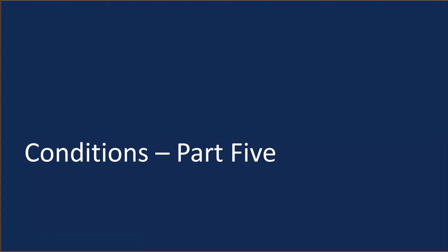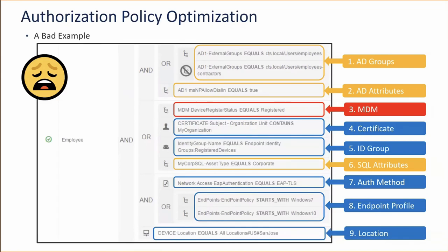For policy optimization, hit counters are a quick win. Every RADIUS policy in ICE has a hit counter — policy set, authentication, and authorization. This is both a troubleshooting tool and a visual aid to confirm policies are working as intended. If a policy has zero hits, check whether it's in the right order or whether you even need it. Unnecessary policies consume ICE processing cycles. An example of an inefficient rule: a user matches active directory group, registered devices identity group, MDM registration — but then gets rejected because they're not in San Jose. ICE had to process all those conditions before reaching the reject. This is inefficient and should be restructured.